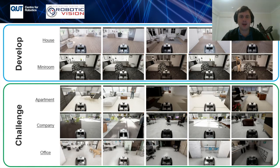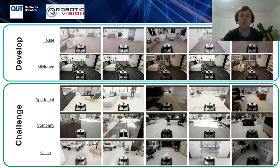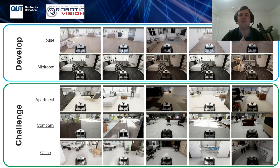We provided several environments for this challenge, two of which were kept as development environments where the 3D ground truth object maps were provided, and three where the maps were withheld for challenge testing purposes. For each of the five base environments, we created five variations for both providing variety to the challenge and for the scene change detection challenge specifically. Of these five variations, there were always two that were nighttime versions of these environments.